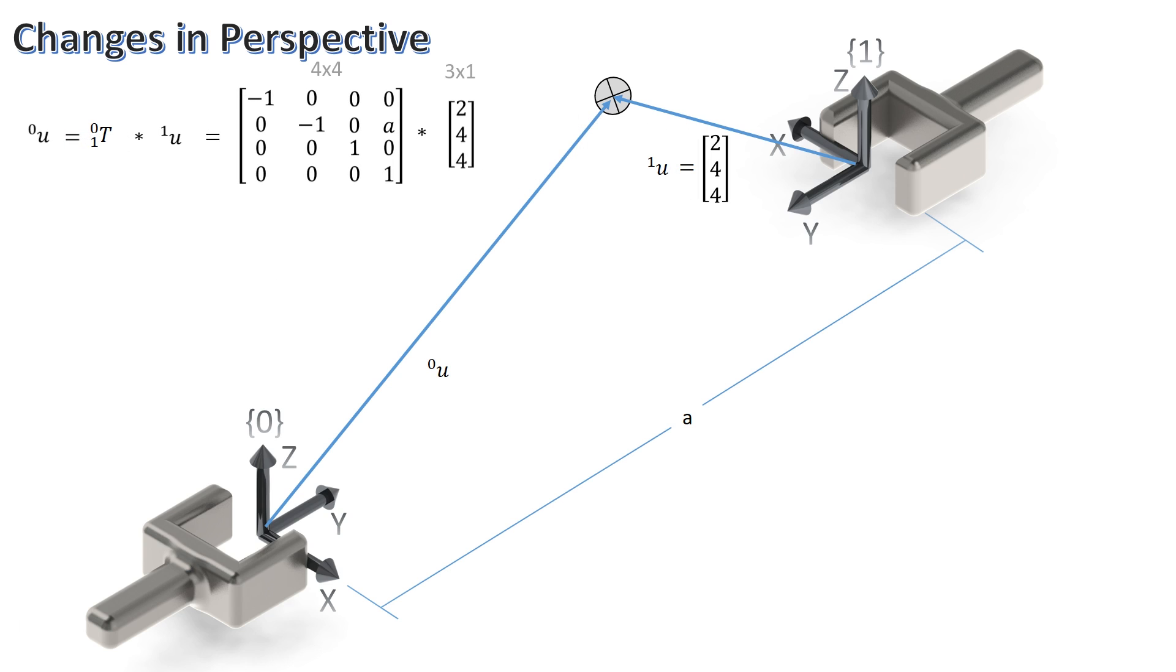However, a 4x4 matrix cannot multiply by a 3x1 matrix because their inner dimensions don't match. We can turn this vector into an augmented vector by adding a 1 to an additional dimension. This will make the inner dimensions between both matrices the same, allowing them to be multiplied by one another. Also notice the notation change for the vector when switching to an augmented vector.